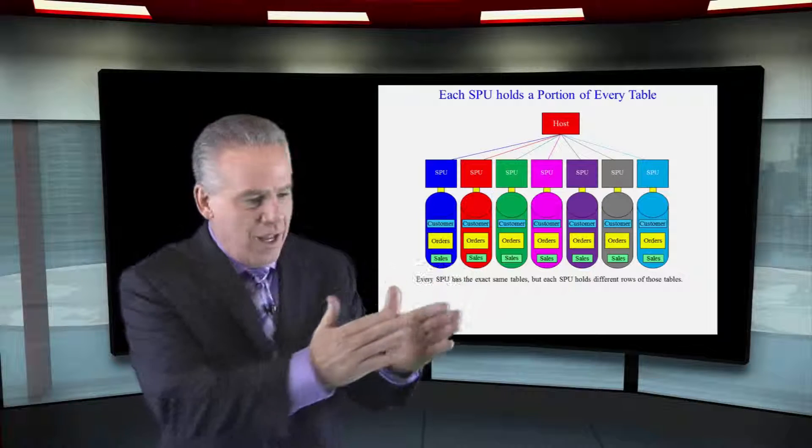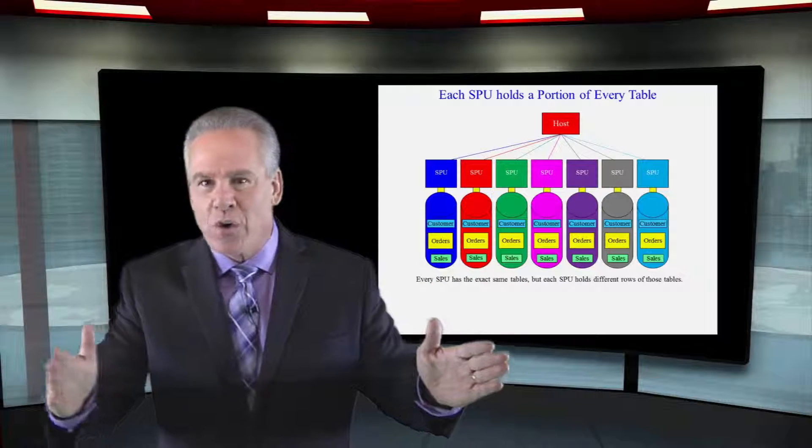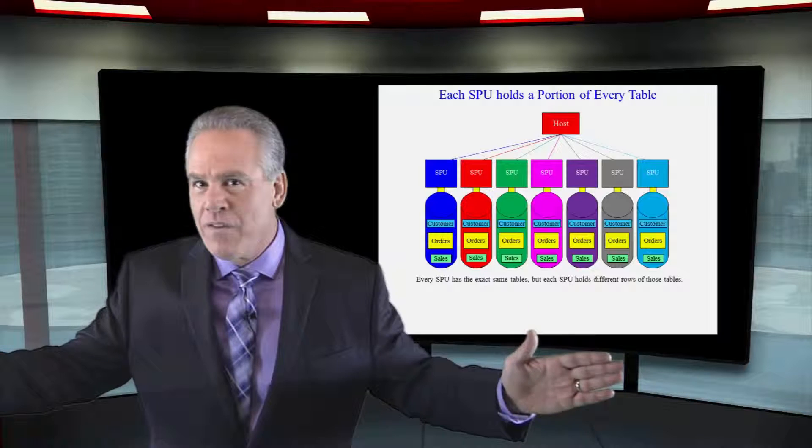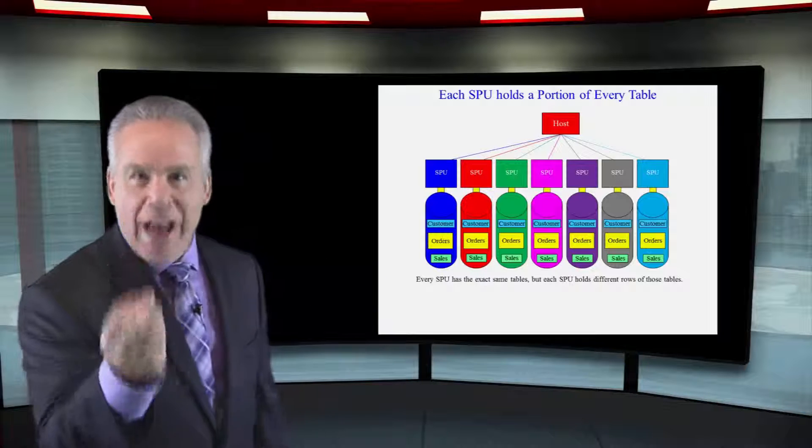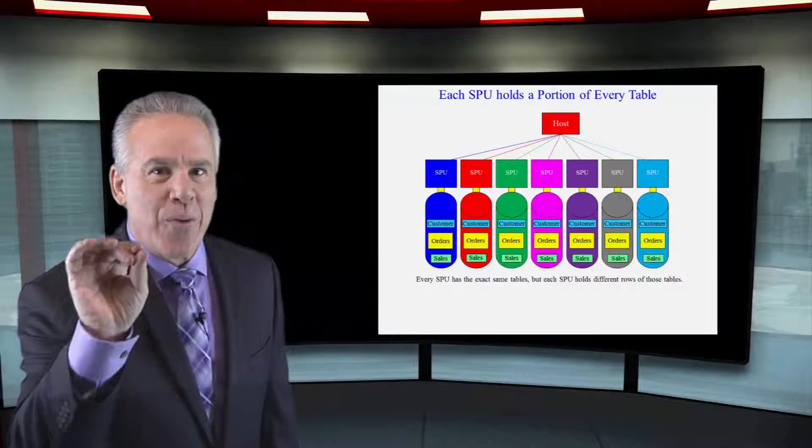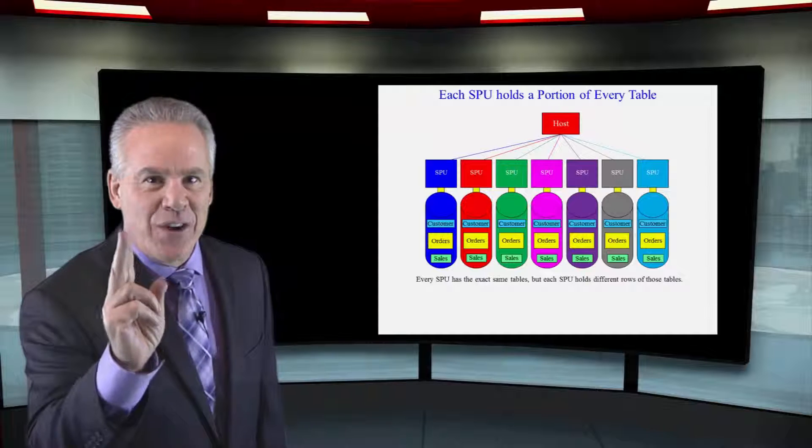When the data is loaded, it is designed to load across every single spool. Whether there's four of them, eight of them, or 2,000 of them. That's the way it works. So think about it and get it in your head.